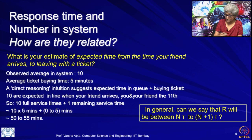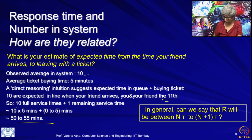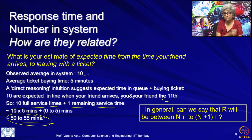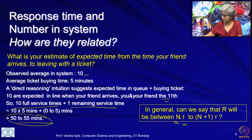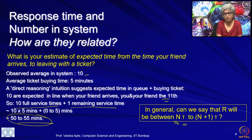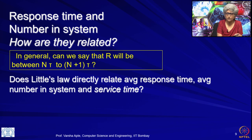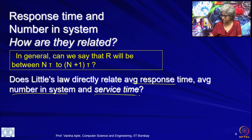Observed average in the system is 10; you become the 11th, you count 10 full service times and then the one remaining service time, giving a 50 to 55 minute range. This is what you would do if you have not done this course. In general, can we say that R should be related in some way to the number in system and tau — going from N·tau to (N+1)·tau? This reasoning seems quite reasonable, and even without knowing the nuances, it does not seem very wrong. So the question is: is this what Little's Law does — relating average response time with average number in system and service time?